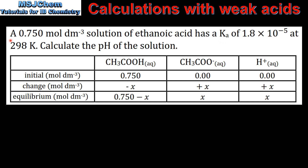A 0.750 mol per decimetre cubed solution of ethanoic acid has a Ka of 1.8 times 10 to the negative 5 at 298 K. Calculate the pH of the solution.